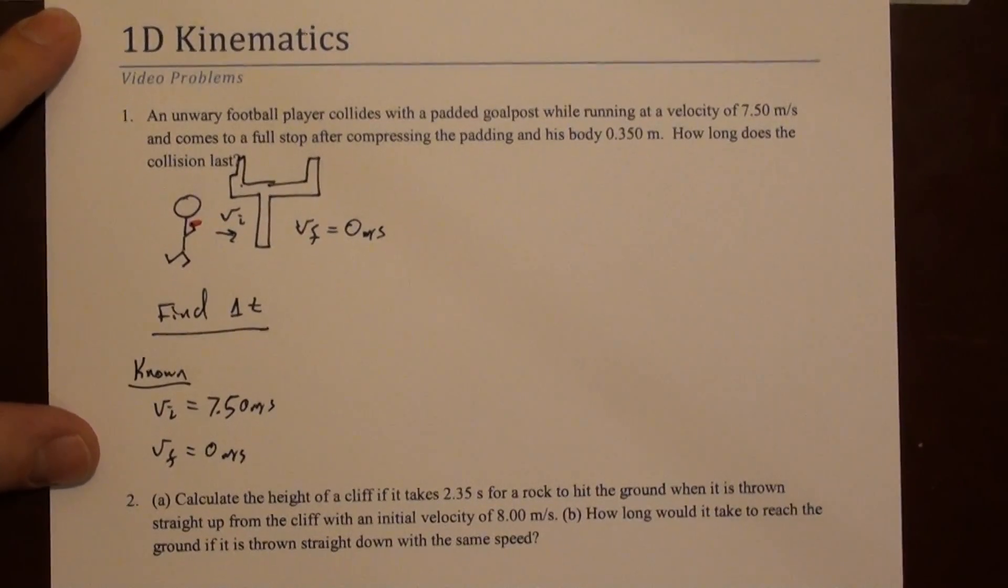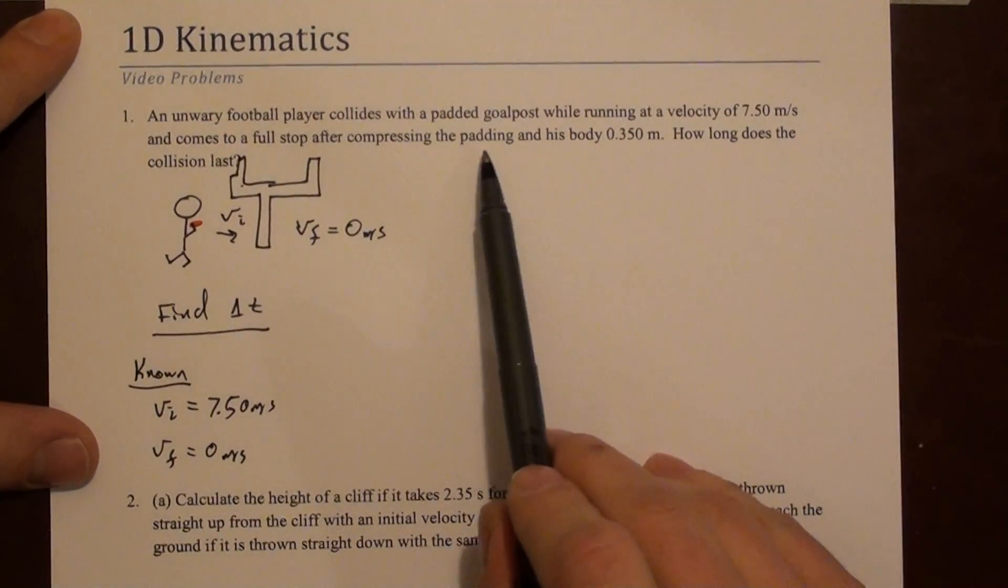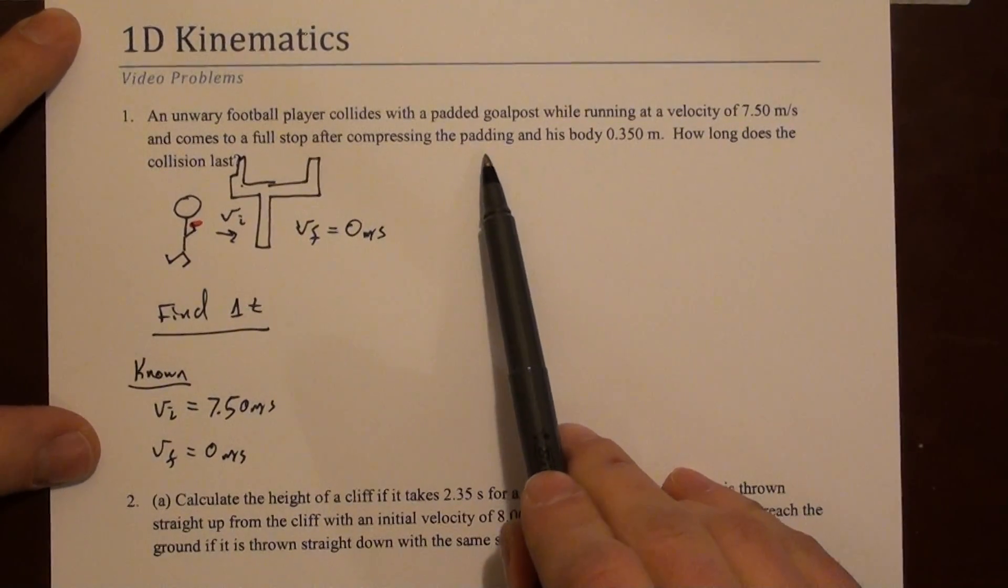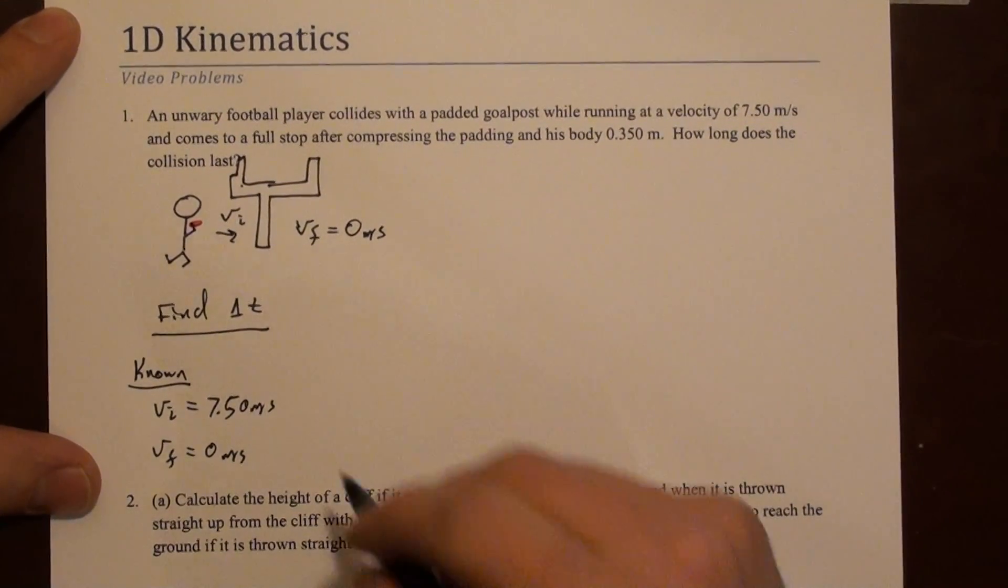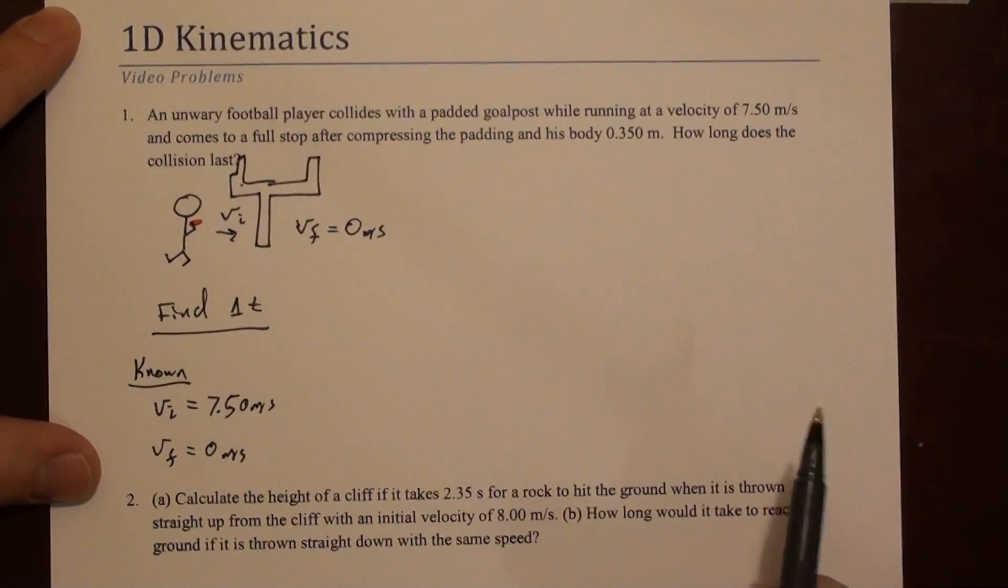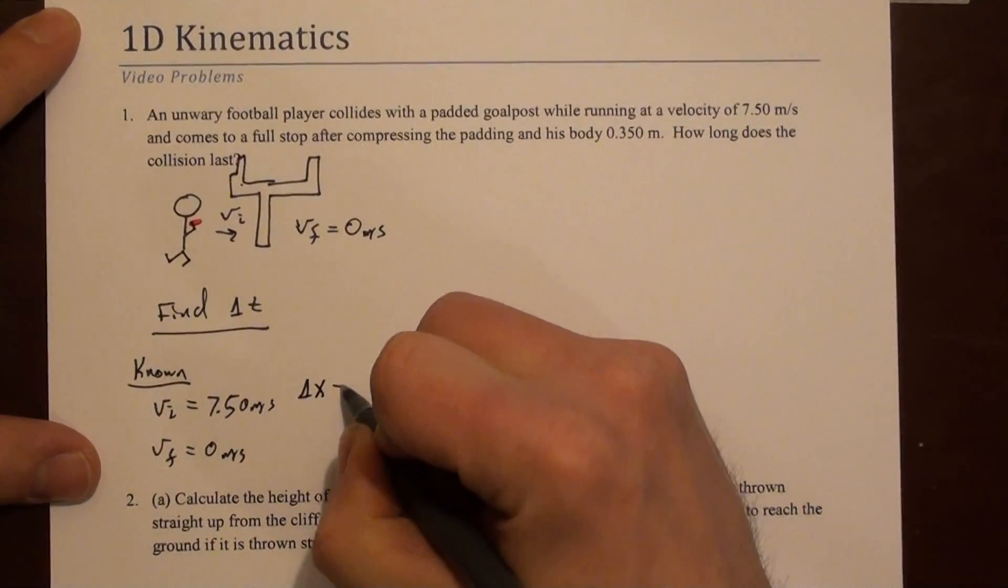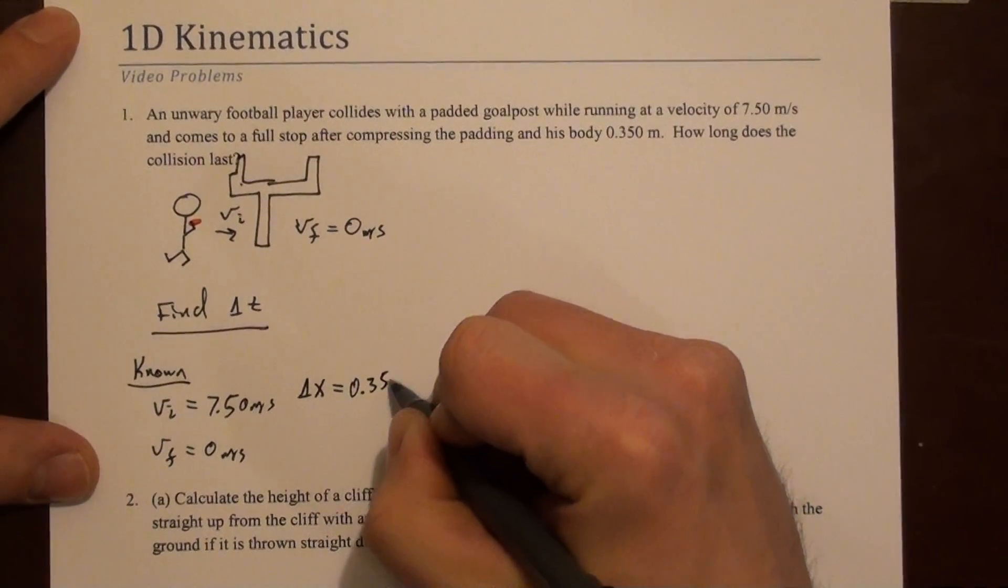We know the final velocity is 0 meters per second. We know that his padding and the padding on the goal post and his body compress by some amount. We must just be talking about the time when he's in contact with the goal post. So that's a delta x. Delta x is 0.350 meters.